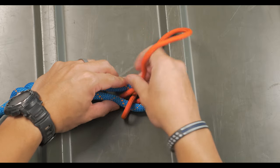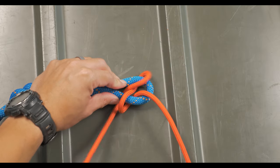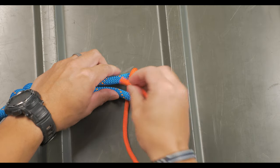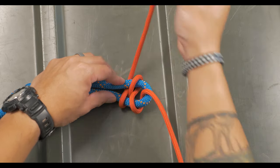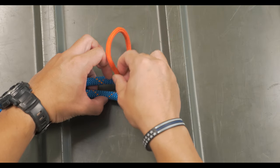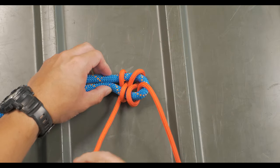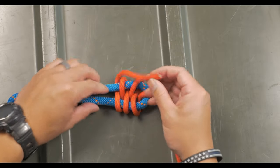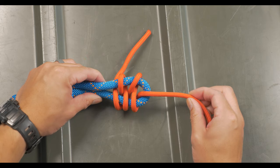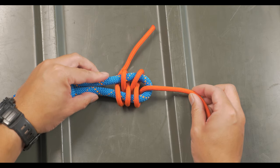And for this you'll want three to five laps. To finish off this knot, you'll tuck the working end under the last wrap to keep it secured.